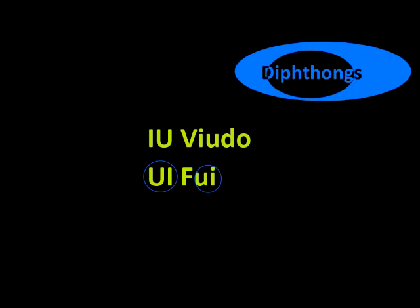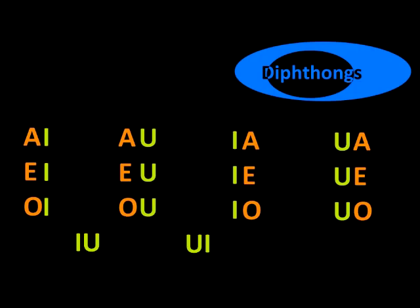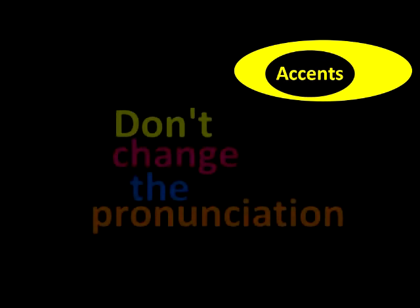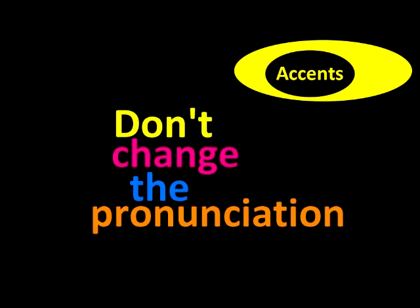Let's repeat all of them: AI, EI, OI, AU, EU, OU, IA, IE, IO, UA, UE, UO, IU, UI. And now we have to focus on the accents. As I said in my previous video, accents don't change the pronunciation of the vowels, but they do have other purposes. So let's see all of them separately.